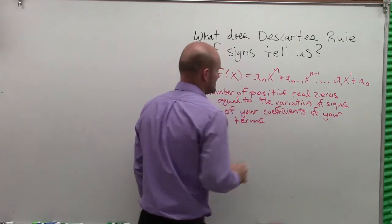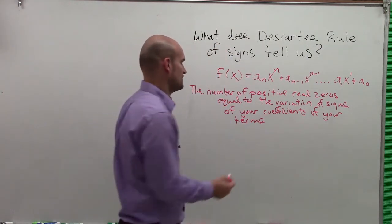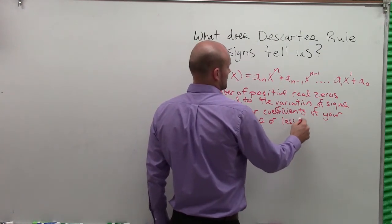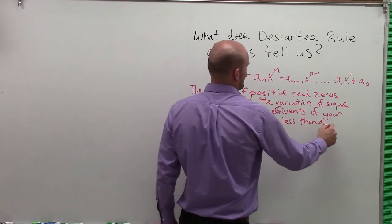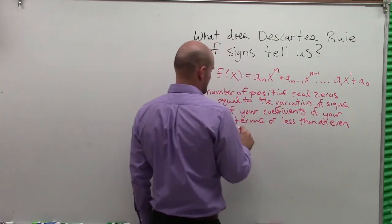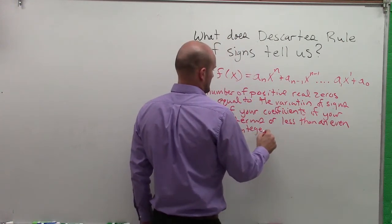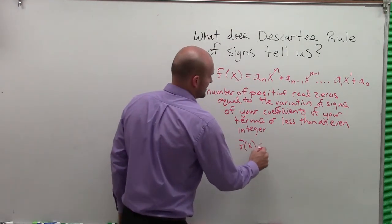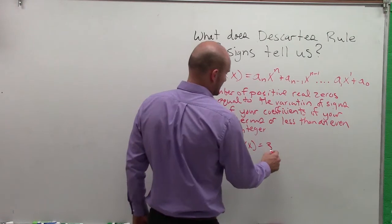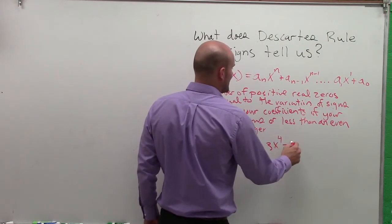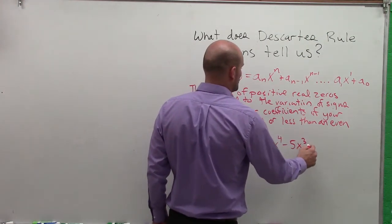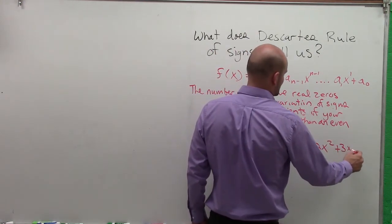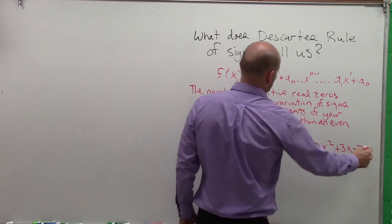So what does this mean? It's equal to the variation of coefficients of your terms or less than an even integer. All right, so let's just take a look at a function. Let's say I had f of x equal to 3x to the 4th minus 5x cubed plus 2x squared plus 3x minus 7.